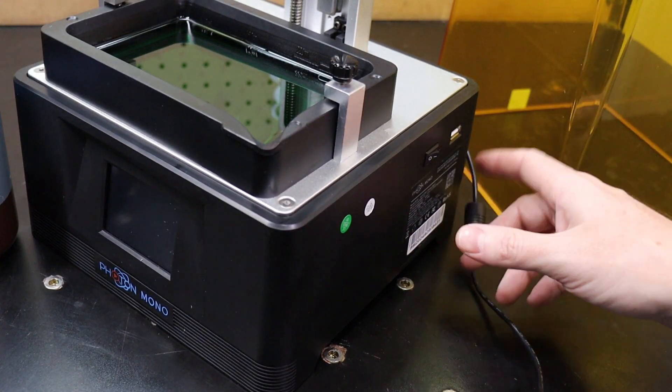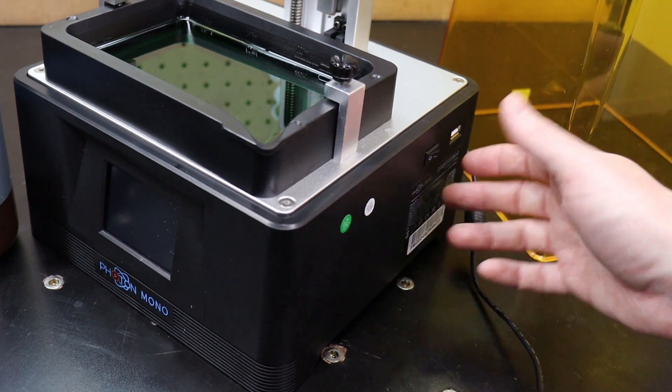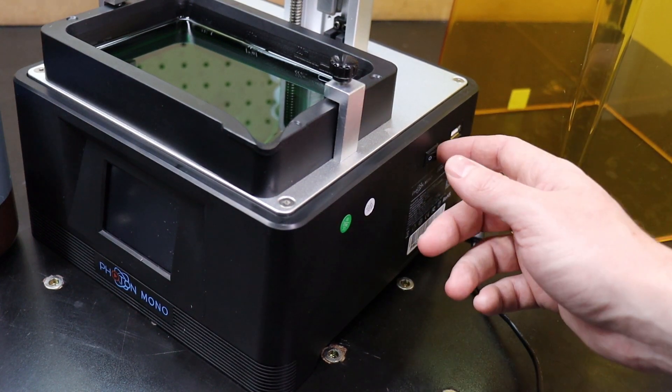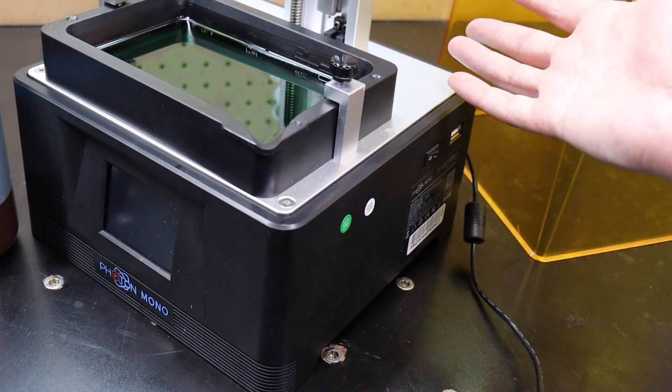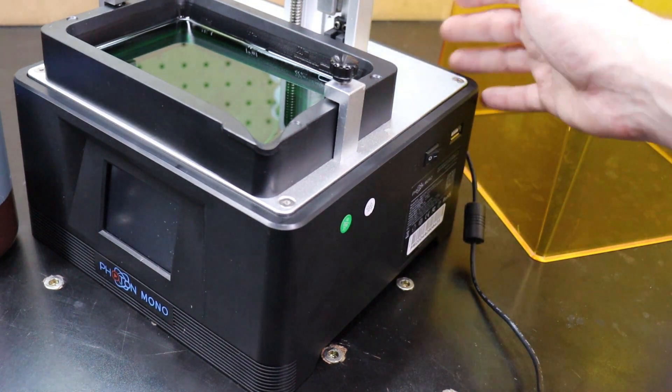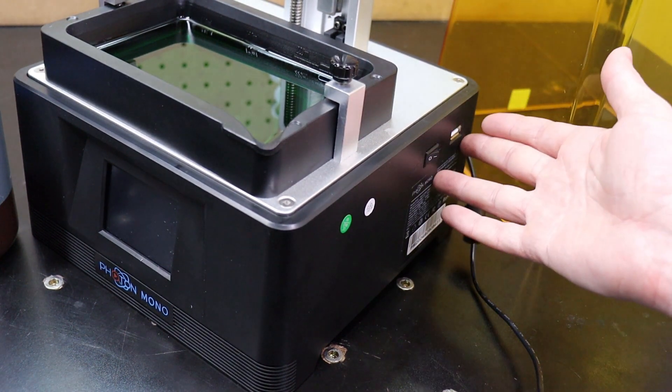When it comes to the on and off switch and the ports, they're all on the side which is very nice compared to other printers where the on and off switch is on the back somewhere or the USB is on the back somewhere where you can't really see it without moving the printer around. It's nice to have both on the side.